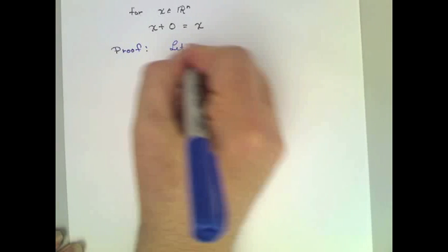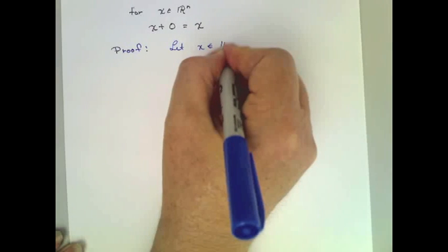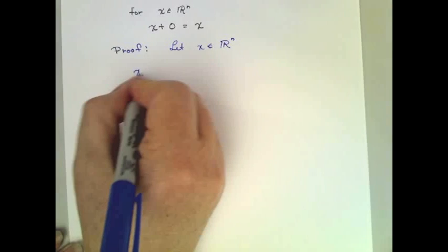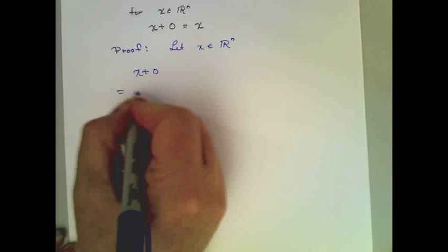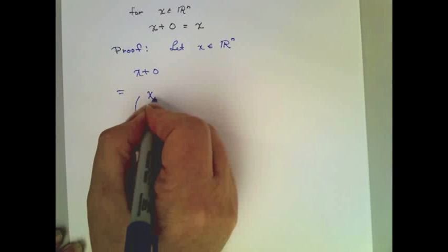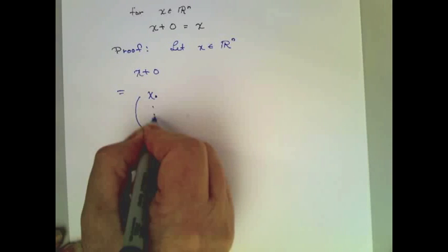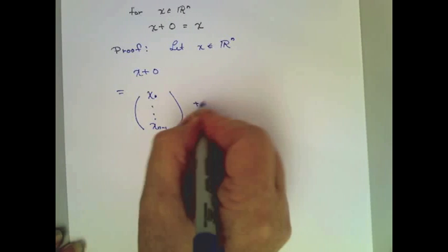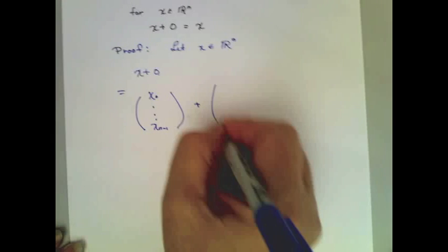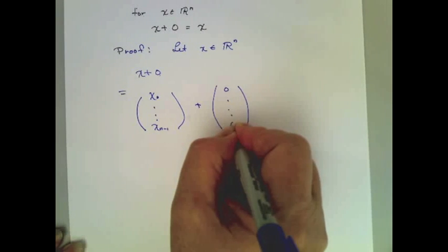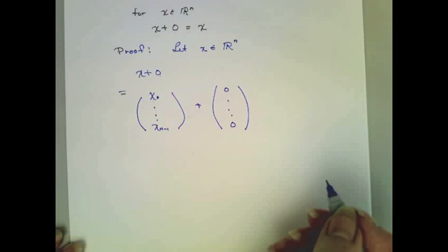Let's let x be a vector of length n, and we'll look at x plus 0. Well, we know from notation that x is just a column vector with components chi 0 to chi n minus 1, and I just explained this notation represents a vector of the same length whose components are just 0.